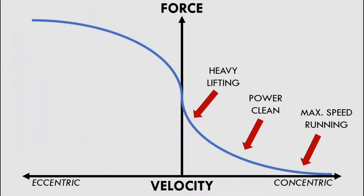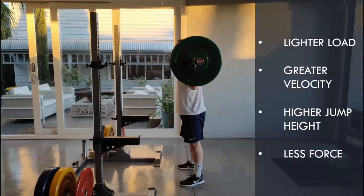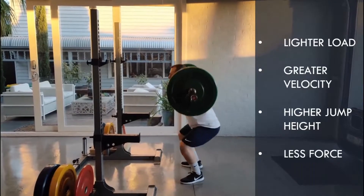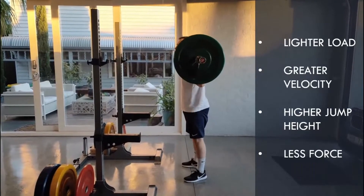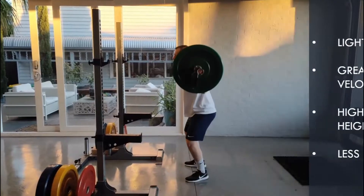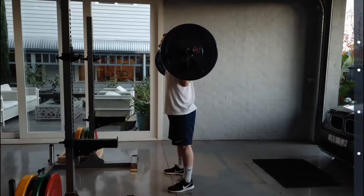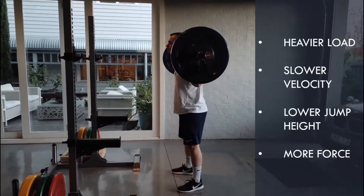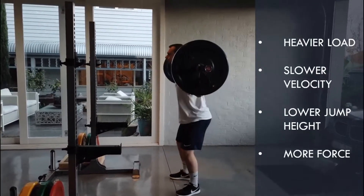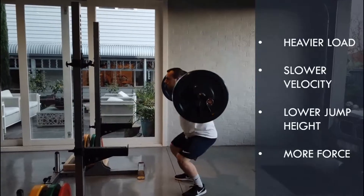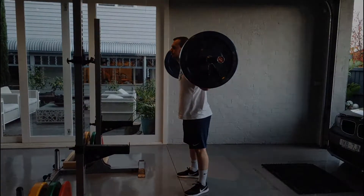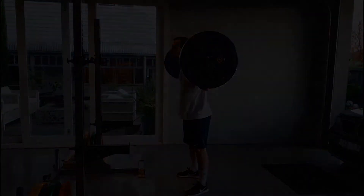For example, if we perform a squat jump for power development, we can load the exercise more or less to alter its force velocity profile. Lighter weights will allow velocity to be faster and for the athlete to jump higher. Heavier loads will mean that more force will be produced, although velocity and jump height will be reduced. However, it is important to ensure that regardless of the load used, the intent should always be to move as fast as possible when training for athletic performance.